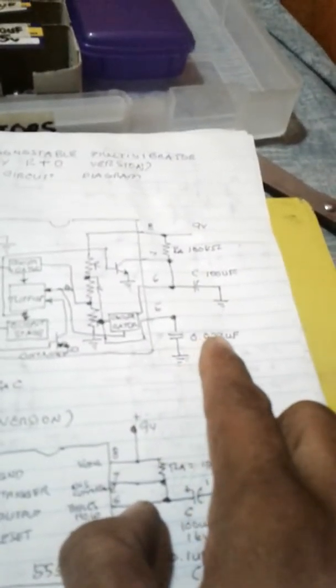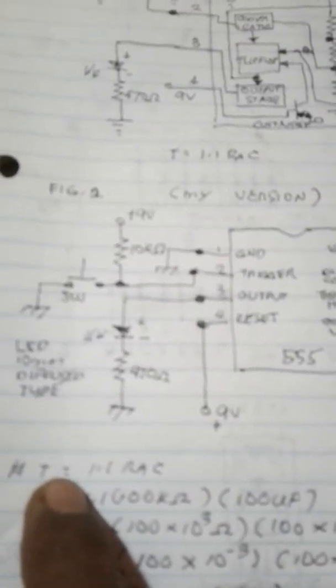I just have 104. The formula used for this time constant is 1.1 times RA times C. RA here is 100k, just like my idol, times the capacitor 100 microfarad.